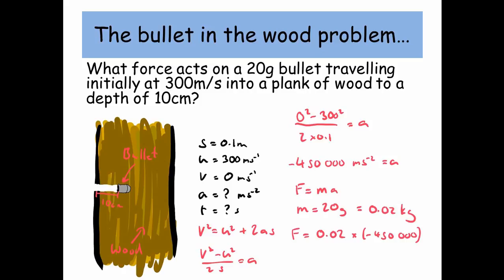Put it all into F equals ma. We get 0.02 times by minus 450,000, and we get a force of minus 9,000 newtons.